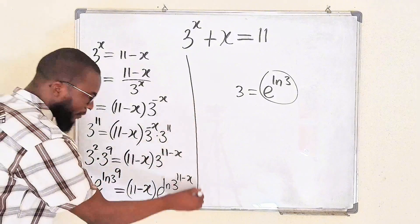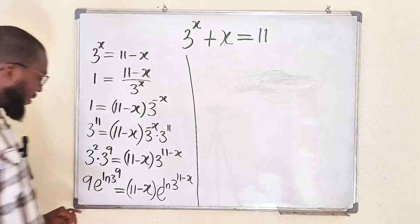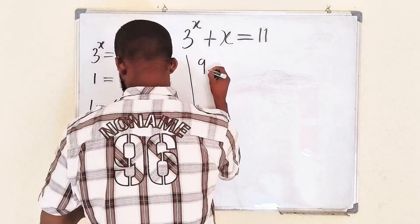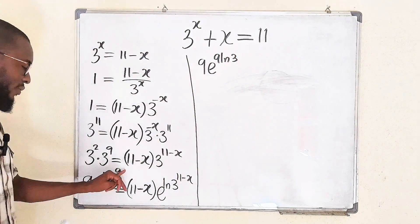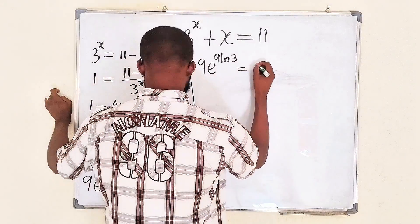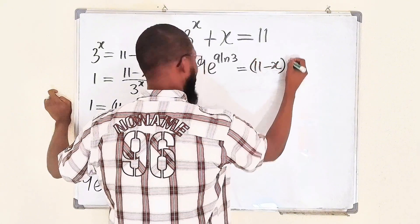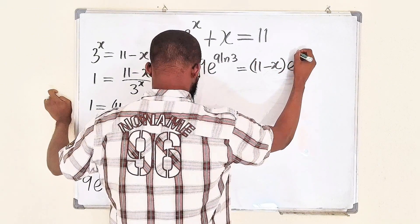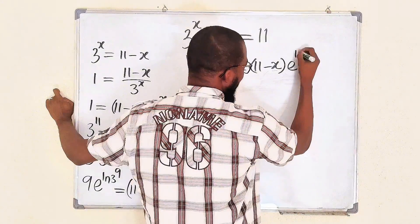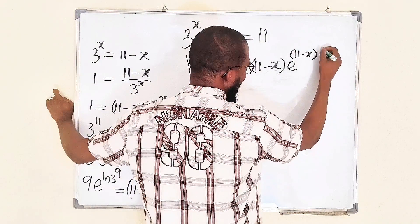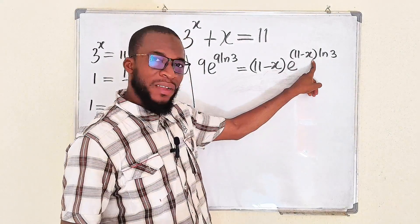You know that this power can drop down to multiply. So we have 9 times e to the 9 ln 3 — we have just dropped 9 down. And this is equal to 11 minus x multiplied by e to the power of... Also, this 11 minus x can drop down to multiply according to one of the laws of logarithm. So this is 11 minus x times natural log of 3. Just observe — this is almost exactly like the left side.